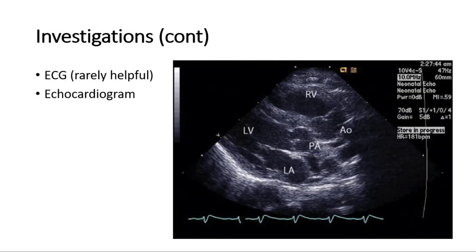ECG is rarely helpful in transposition of great arteries. A more definitive investigation would be the echocardiogram to show the detailed anatomy of the heart. In this echo, you can see that the aorta (AO) is connected to the right ventricle, whereas the pulmonary artery (PA) is connected to the left ventricle — confirming transposition of the two great arteries.